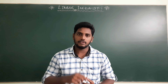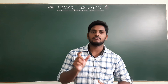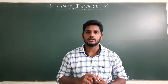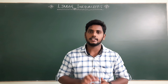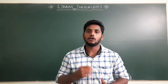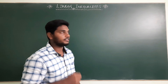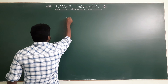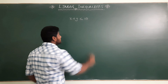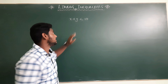In previous classes we have drawn graphs on linear inequalities when they give x and y with only one inequality. Now, if they give two inequalities at a time, or three or four inequalities, then how to draw a graph and how to find the solution? For example, if the equation is x plus y less than 10, how do we find the solution of this?